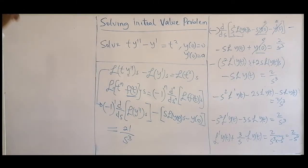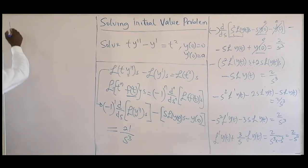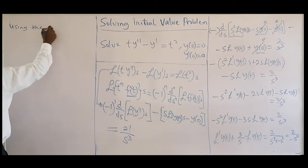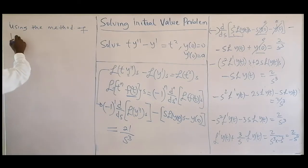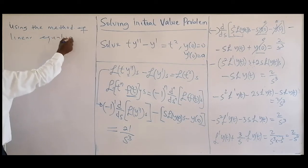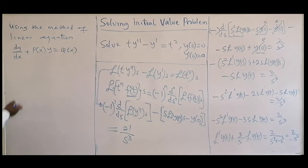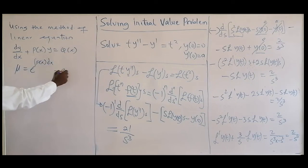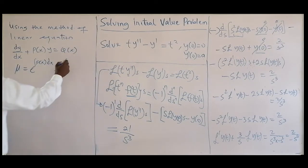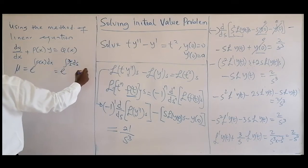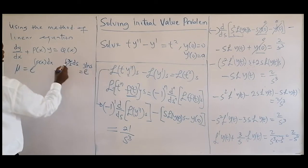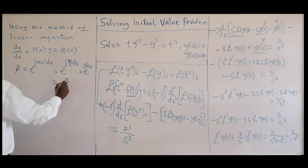Using the method of linear equations, we match to the standard form with P(S) and Q(S). We get the integrating factor, which equals e to the integral of P(S) dS. Our P(S) from this equation is 3 over S, so the integrating factor is e to the integral of 3 over S dS, which equals e to the 3 ln S, and that equals S cubed.